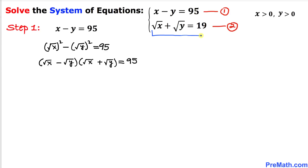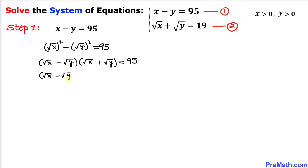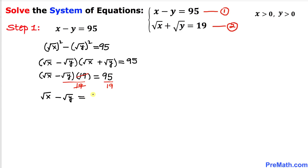We can see that square root of x plus square root of y equals 19 from equation two, so we replace that part with 19. This gives us: square root of x minus square root of y, times 19, equals 95. Dividing both sides by 19, we get: square root of x minus square root of y equals 5.